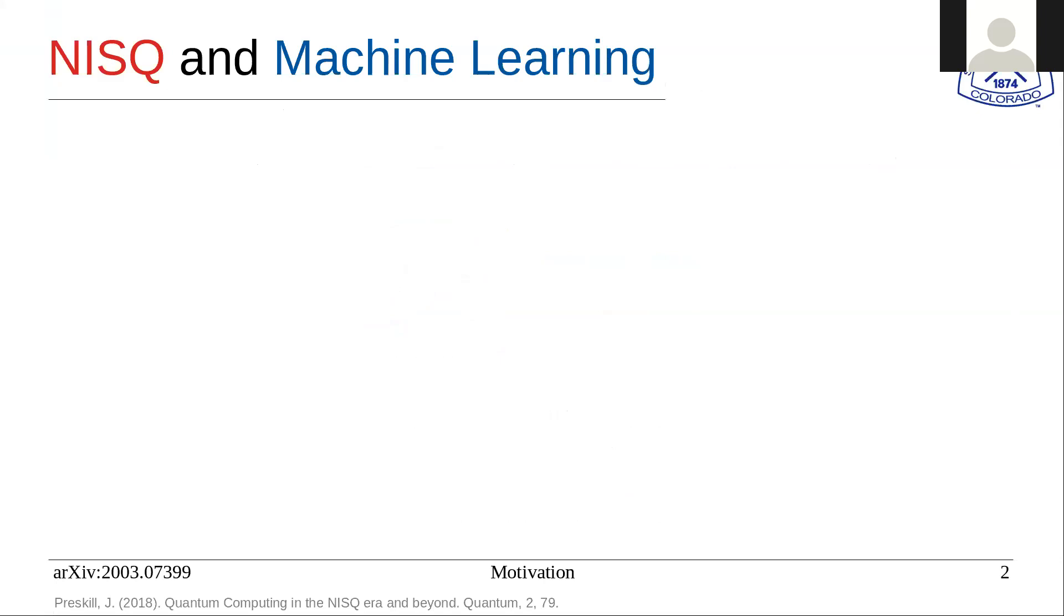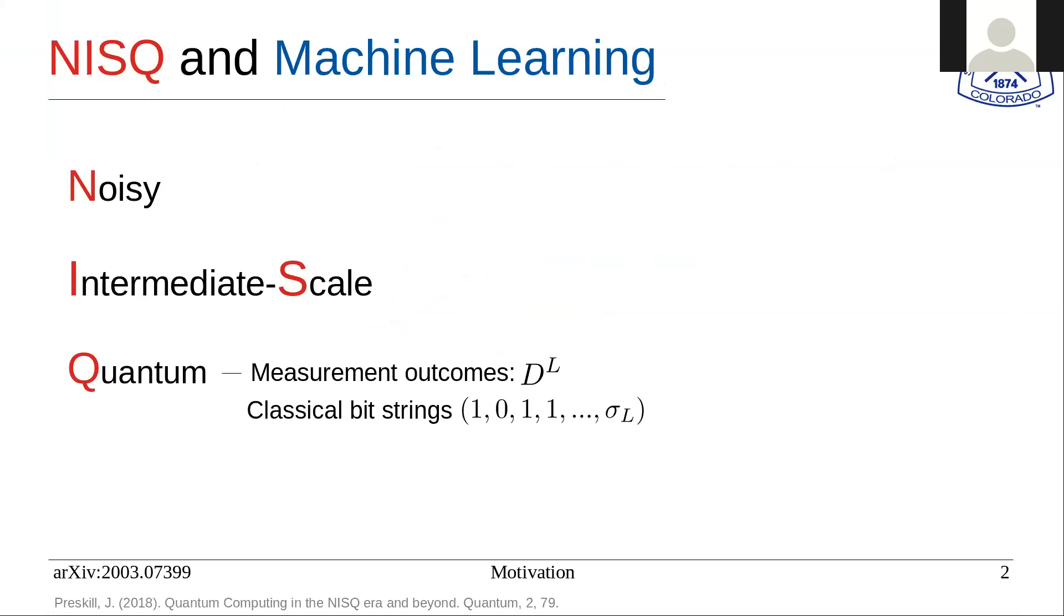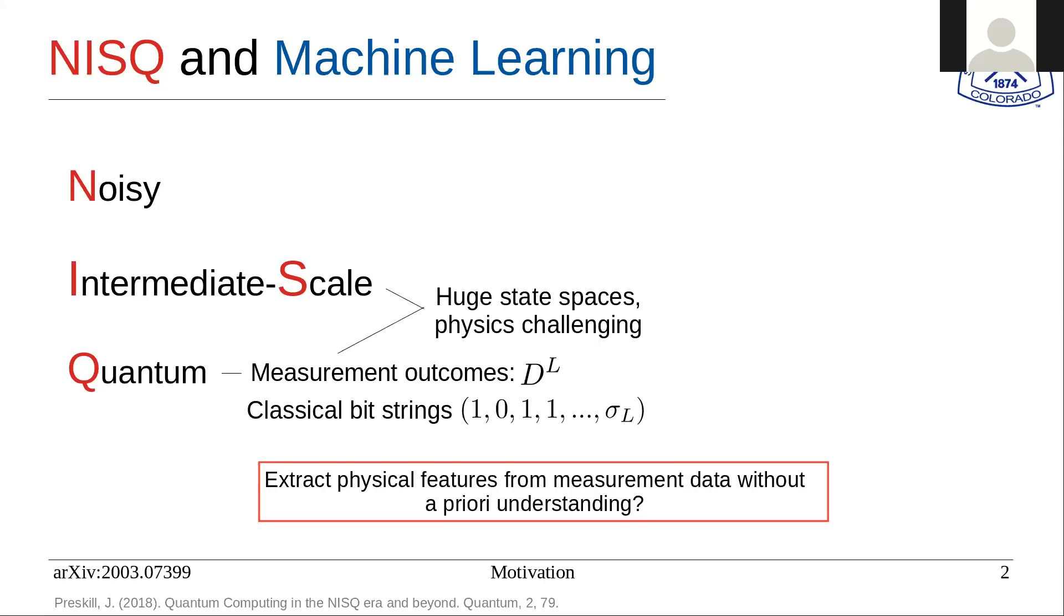First, we'll talk about the motivation. We are currently in the NISQ era of quantum simulators, the noisy intermediate scale quantum. Quantum implies that the measurement outcomes are exponentially growing in the Hilbert space and exponentially grow with the system size. When I talk about measurement samples or sample data, I'm talking about classical bit strings that are the measurement outcomes of measuring the state of a quantum simulator in a particular basis. These result in huge state spaces which are very difficult to extract the physics from, especially when there's no a priori understanding or the models are not simple enough.